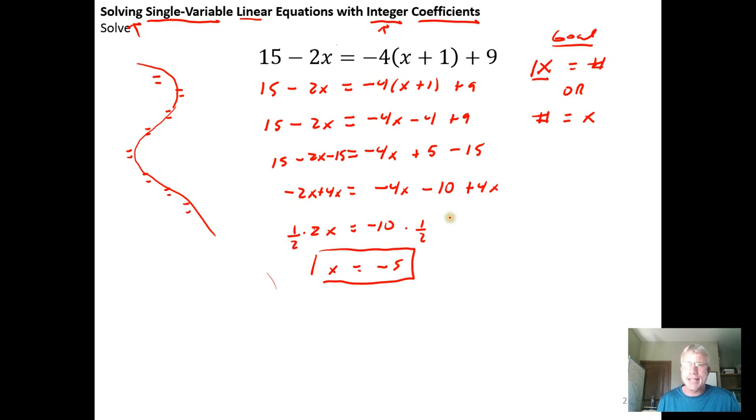So we're technically done right here, but if I were in an exam setting, I would probably want to check my work to make sure that I didn't do this incorrectly. So I would take my negative 5 and pop it back into the original equation. So I'd go 15 minus 2 times x equals negative 4 times x plus 1 plus 9. And then everywhere there was an x before, I would replace it with the negative 5.